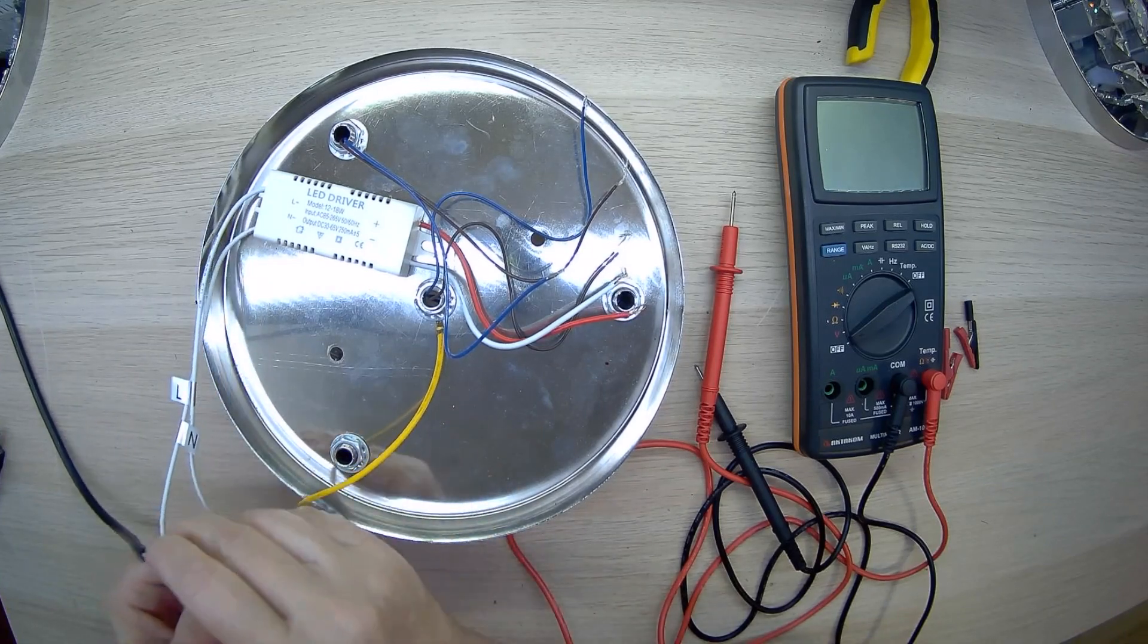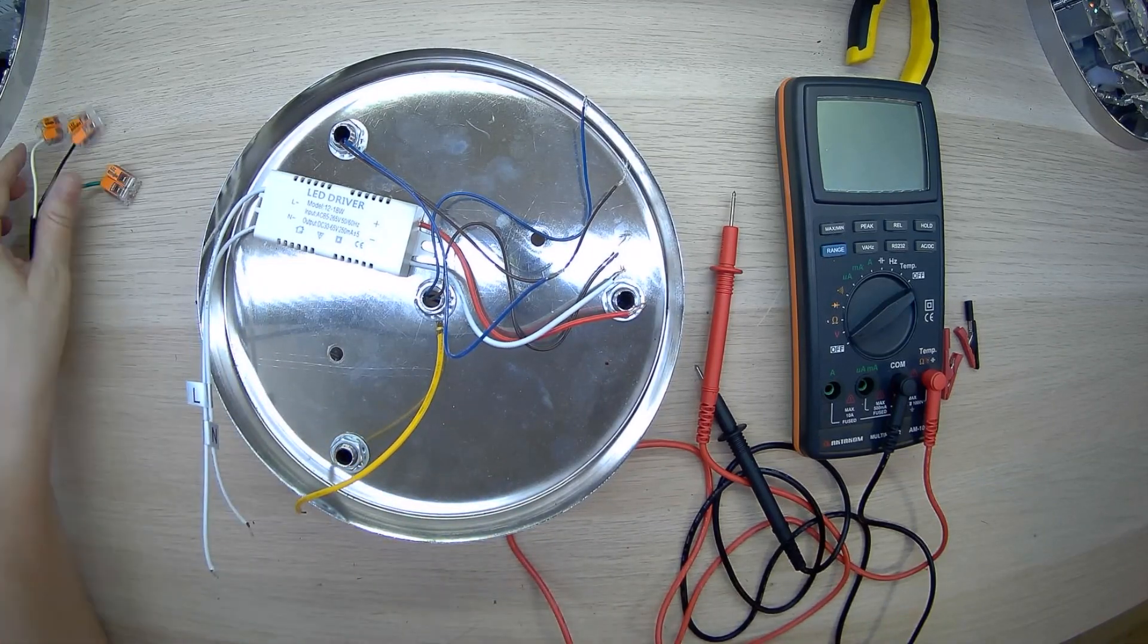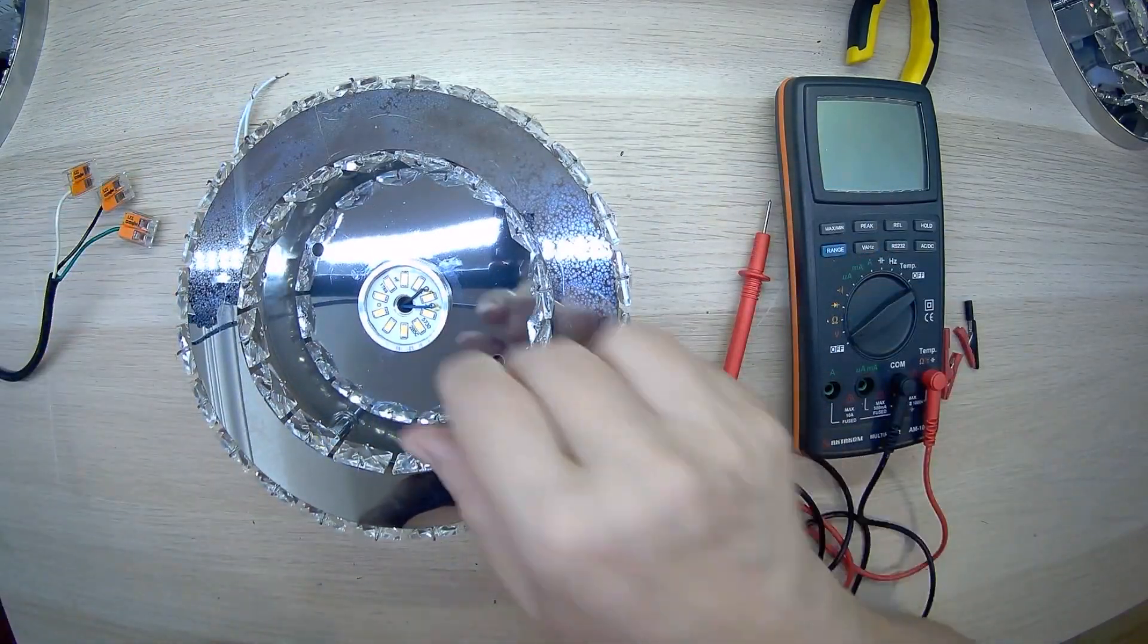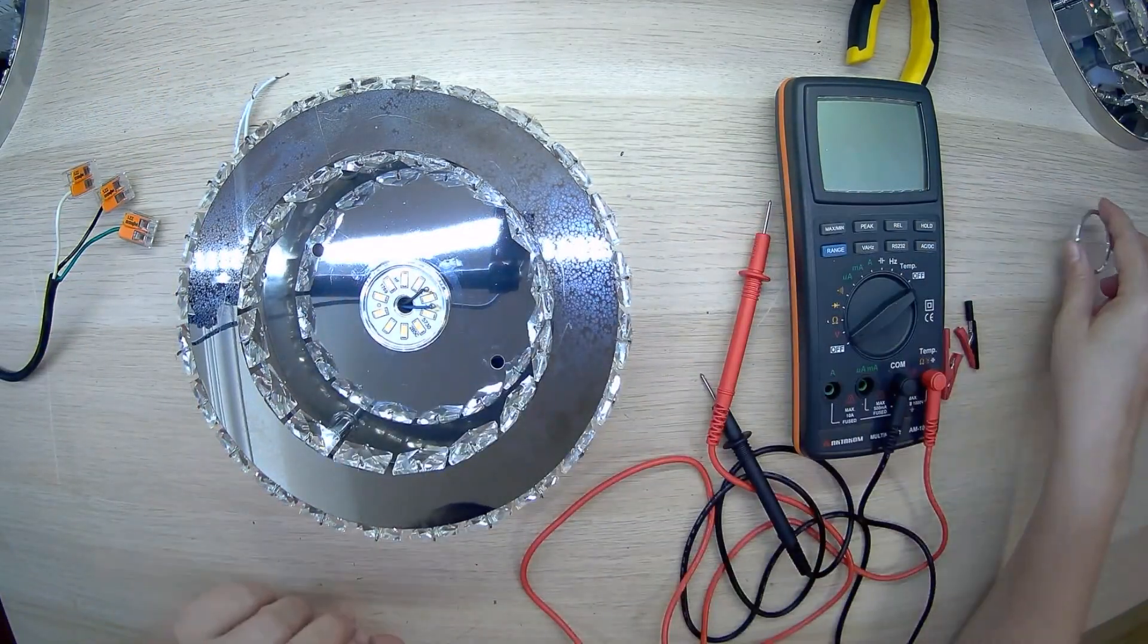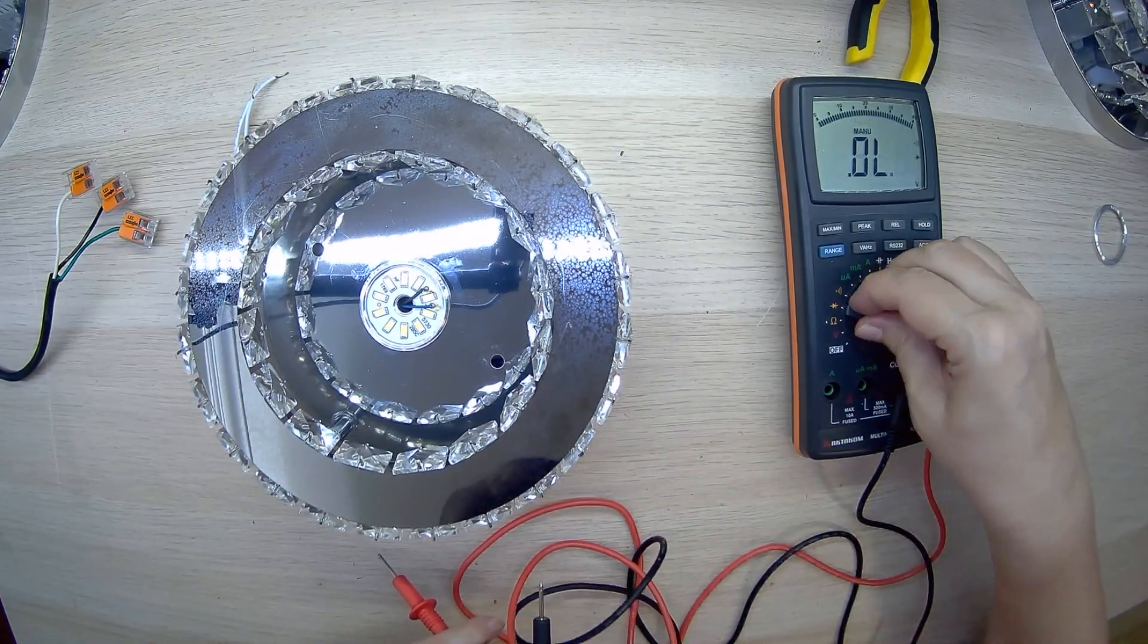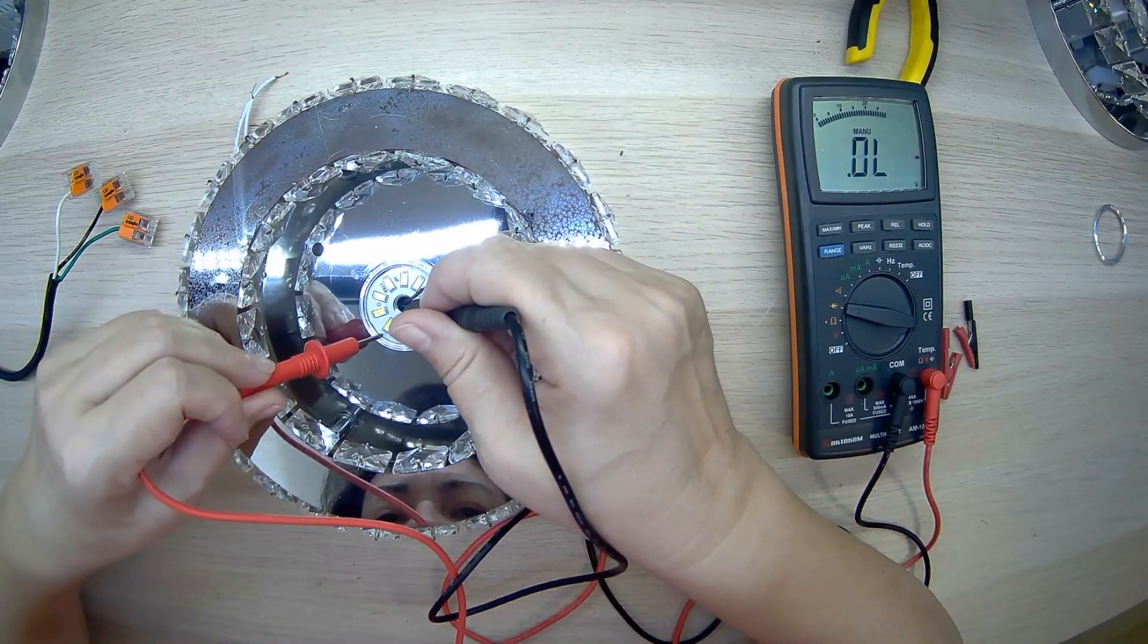We use the M1060 multimeter to check the LED of a small section. In the previous video, the link is in the upper corner, we explained why when checking an LED with a multimeter, it is easy to immediately determine the LED connection diagram of the strip.